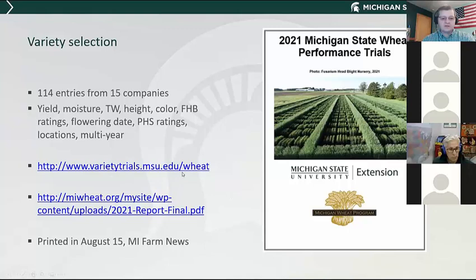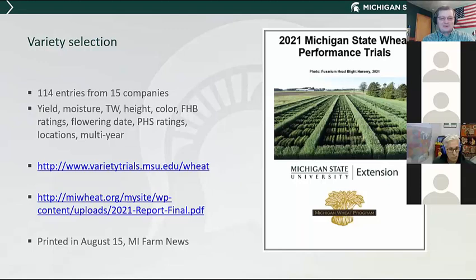In that report, we have data from about 114 different varieties from 15 companies. We've got the usual suspects of data, including yield, moisture, test weight, height, color, Fusarium head blight ratings, flowering date, and pre-harvest sprout ratings. We have eight locations and multiple year data in that report. I keep getting calls from growers asking about specific data, and it's all in the report — look through it. It's also posted on the Michigan Wheat website, the farmer checkoff program for wheat.